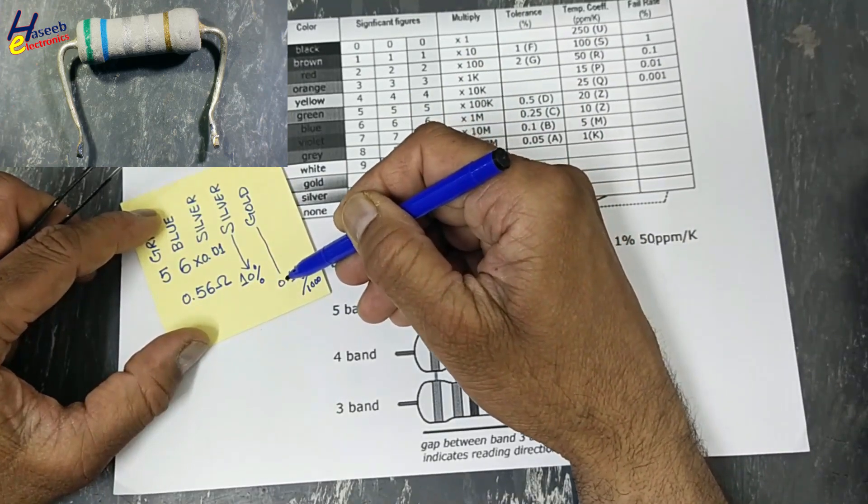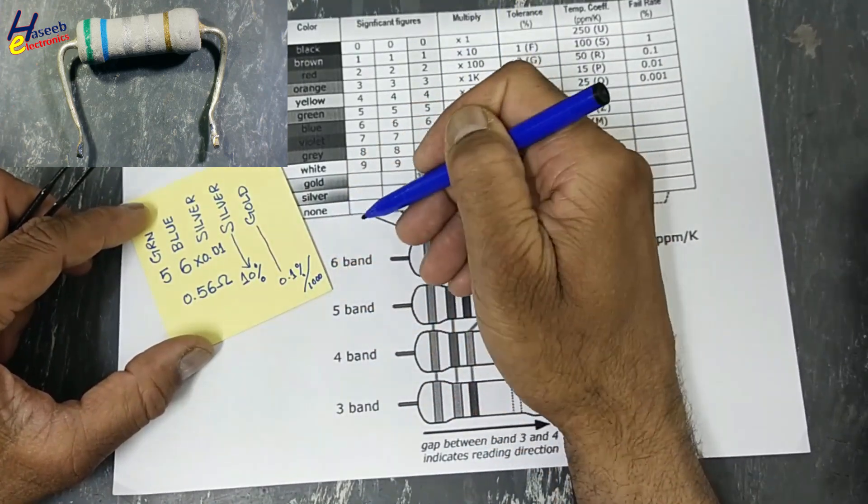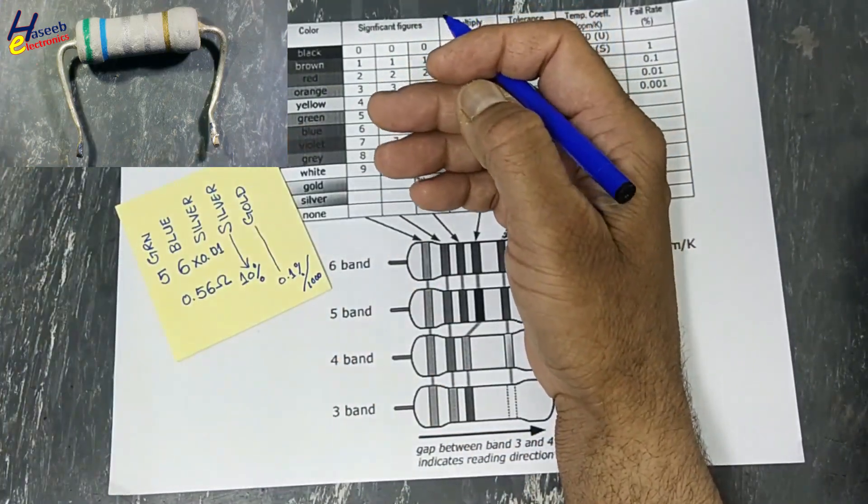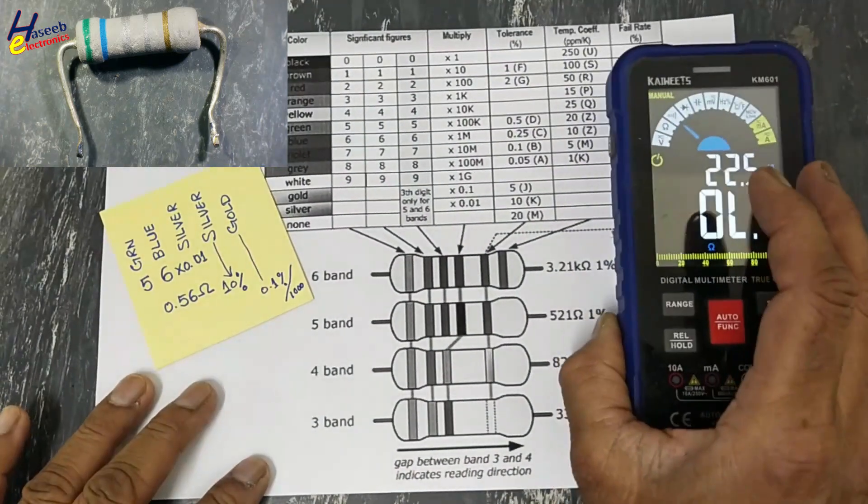1000 hours operation, 0.1 percent failure rate. In normal resistors, we will not find this band, so it is high reliability or high quality resistor.